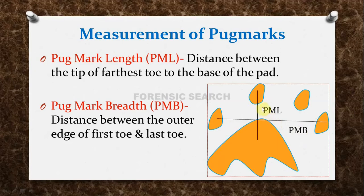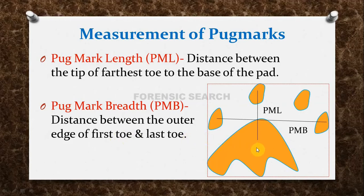Pugmark Length is the distance from the tip of the farthest toe — suppose the farthest toe is here — from there to the base of the pad. That distance is called Pugmark Length (PML). And Pugmark Breadth is the distance between the outer edge of the first toe and the last toe, known as Pugmark Breadth (PMB).